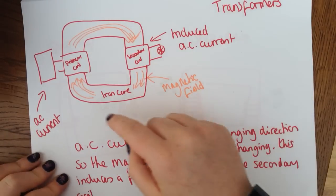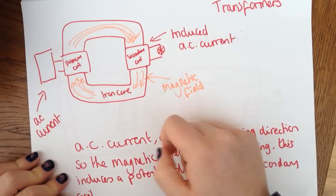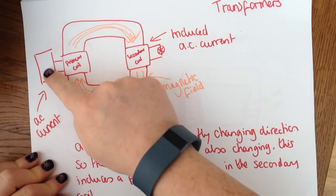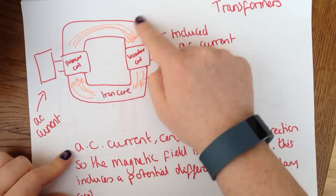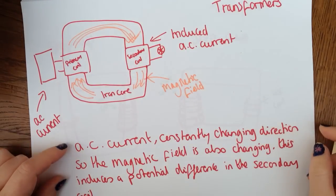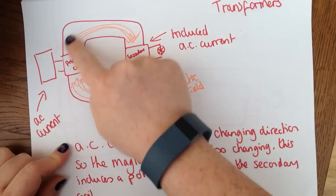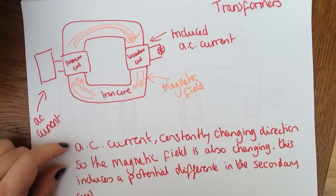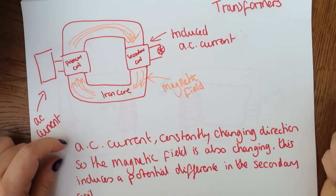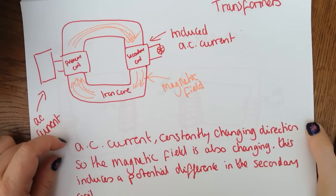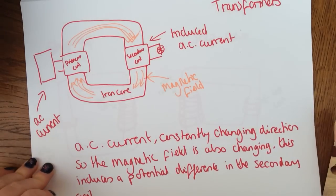So this is our transformer here. We have a primary coil and a secondary coil and our iron core. We have an AC current in here and an induced potential difference over here, and an induced magnetic field. As the AC current is constantly changing direction, which means the magnetic field is constantly changing direction, inducing a potential difference in the secondary coil.